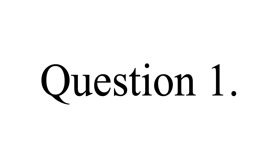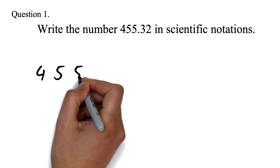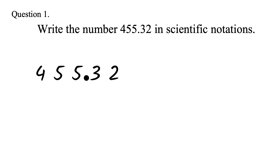Question 1: Write the number 455.32 in scientific notation. To write in scientific notation, we have to move the decimal behind the first non-zero number, then multiply the new number by 10 to the exponent of the number of times we moved.